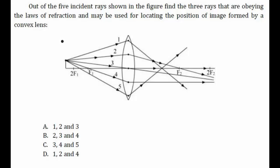Hello everyone, let's try to solve this question from the chapter on reflection and refraction. Out of the five incident rays shown in the figure, we need to find the three rays that obey the laws of reflection and may be used for locating the position of the image formed by a convex lens.